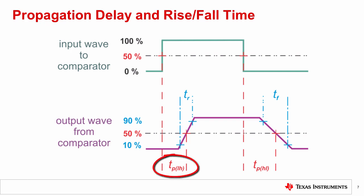one for the output transition from low to high, designated TPLH, and another for the output transition from high to low, designated TPHL.